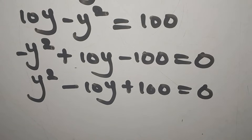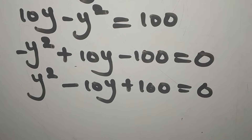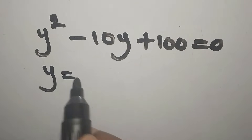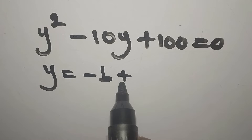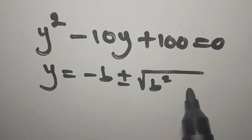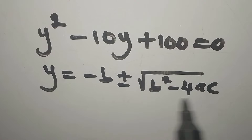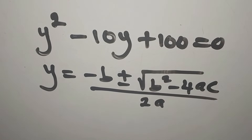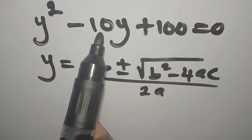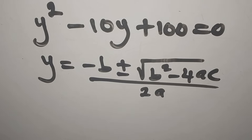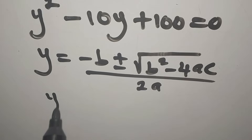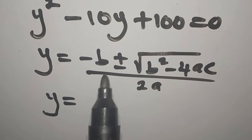We have a quadratic equation and we'll solve it using the quadratic formula: y equals negative b plus or minus the square root of b squared minus 4ac, all over 2a. Our values are: a equals 1, b equals negative 10, and c equals 100.